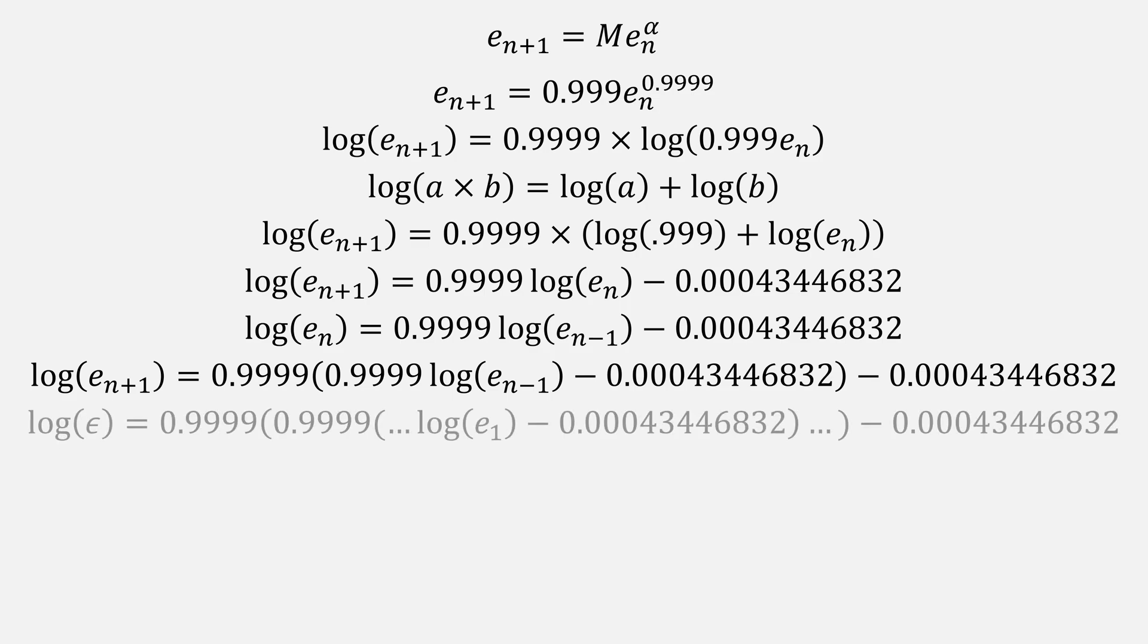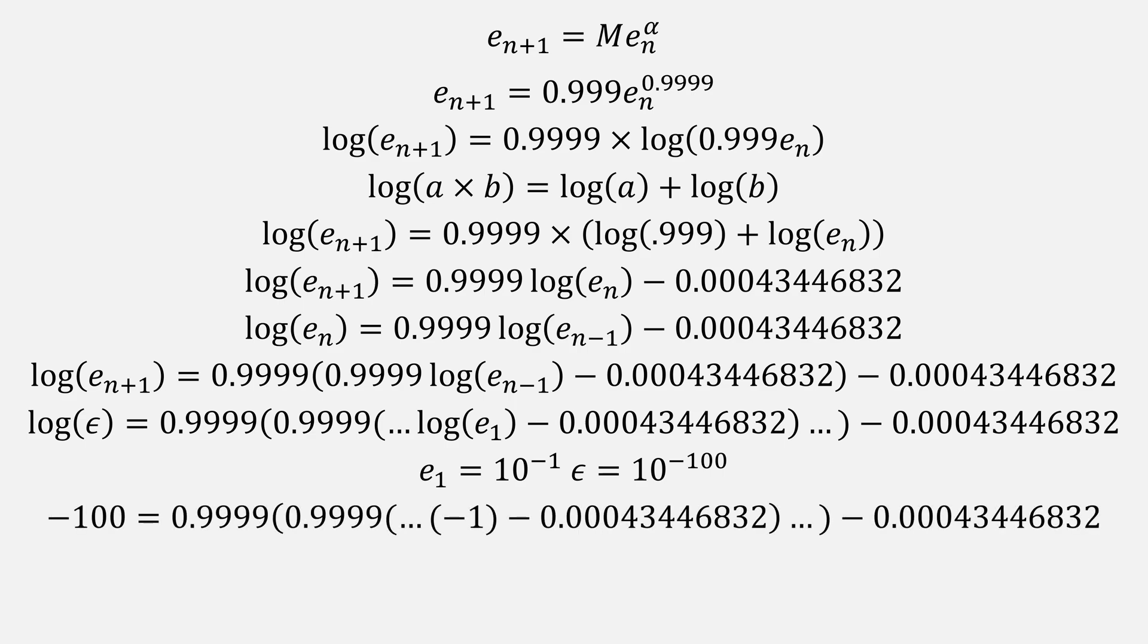To find our final error, which is our tolerance epsilon, it would give us something that looks like this. We would then need to figure out how many terms are in this sequence. Given from our first error of, let's just say, 10 to the minus 1, to our final error of 10 to the minus 100. Giving a form that looks like this.